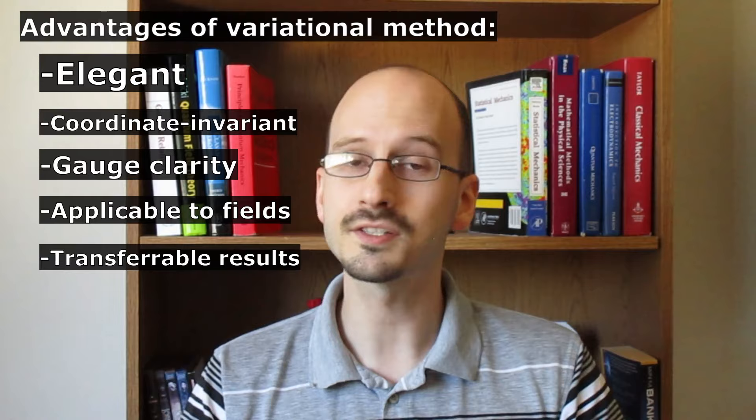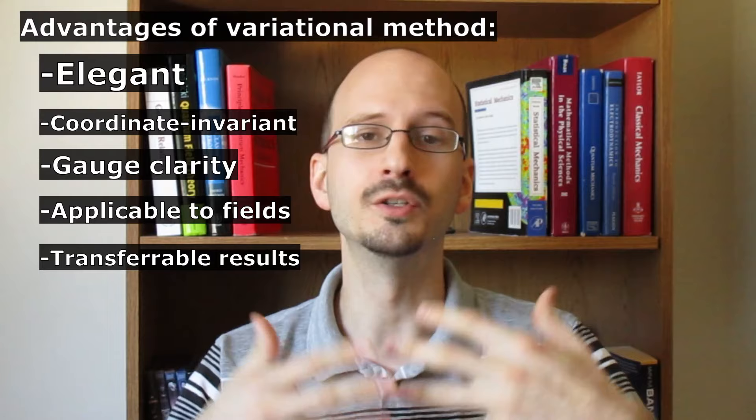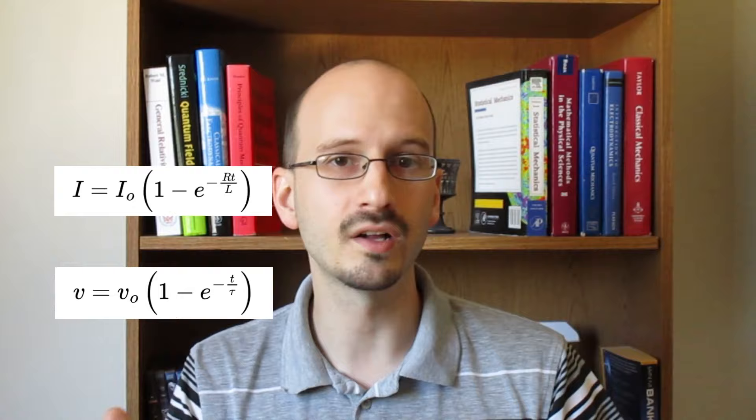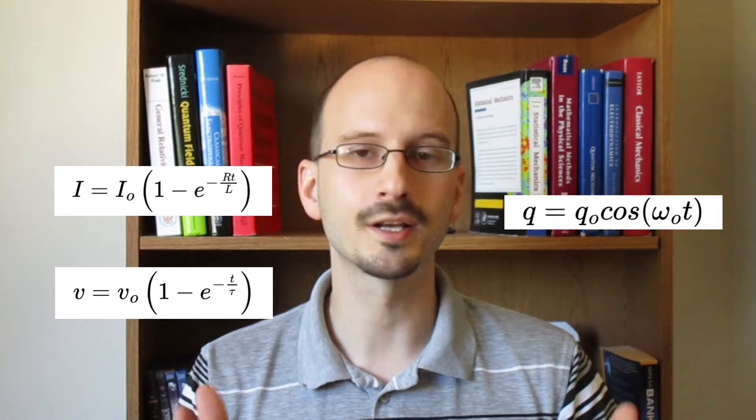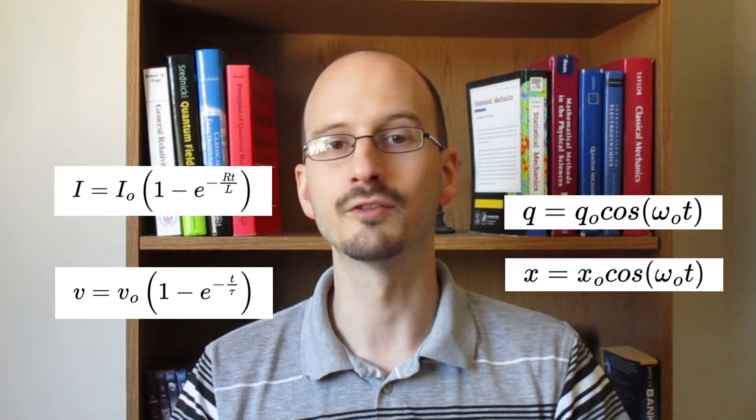Finally, many physical systems have exactly the same math. So if you solve for the math in one system, you can use the same ideas in the other system. For some examples, if we look at an RL circuit, that is a circuit with a resistor and an inductor, we get an equation for the current that looks like this, which is the same math as the velocity of a solid sphere falling through a viscous fluid. In an LC circuit, the charge on a capacitor is given by this equation, which is exactly the same equation we get for the position of a simple harmonic oscillator.